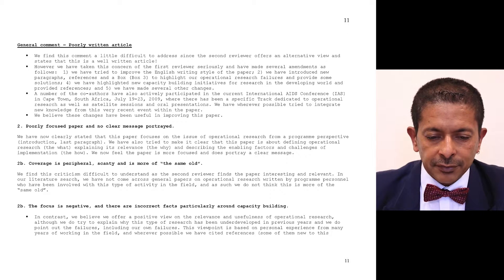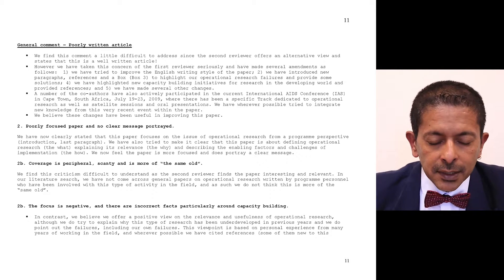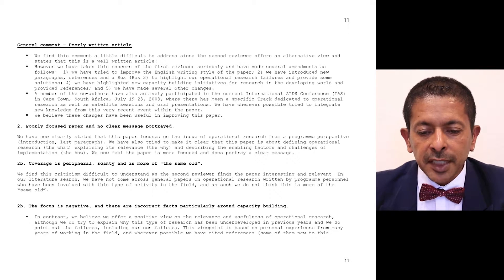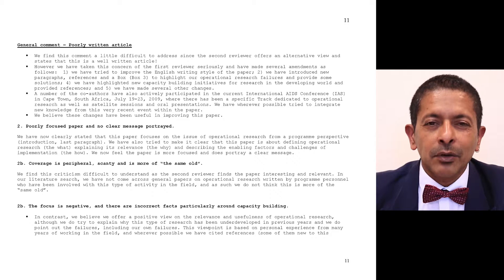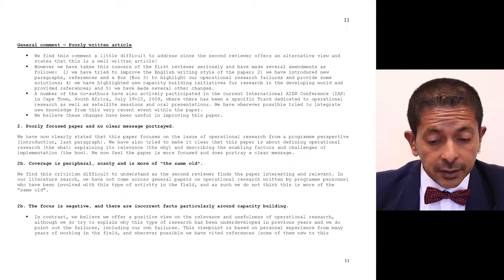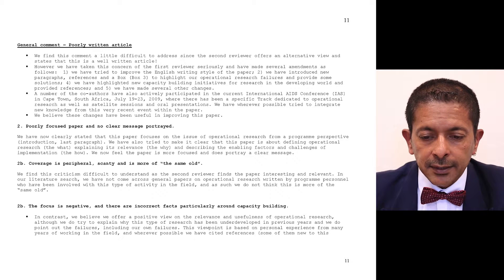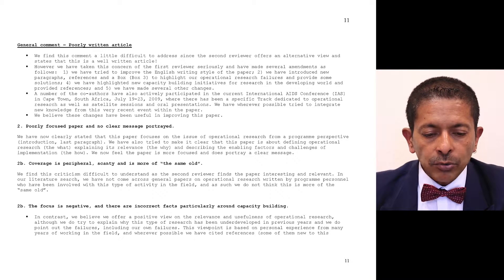On page eleven, addressing reviewer one's first comment that this is a very poorly written article, we said: 'We find this comment a little difficult to address since the second reviewer offers an alternative view and states this is a very well-written article.' We left it at that. However, we took the concern seriously and made several amendments: improving the English writing style, introducing new paragraphs, adding references in a box to highlight our operational research failures and solutions, and highlighting new capacity building initiatives.